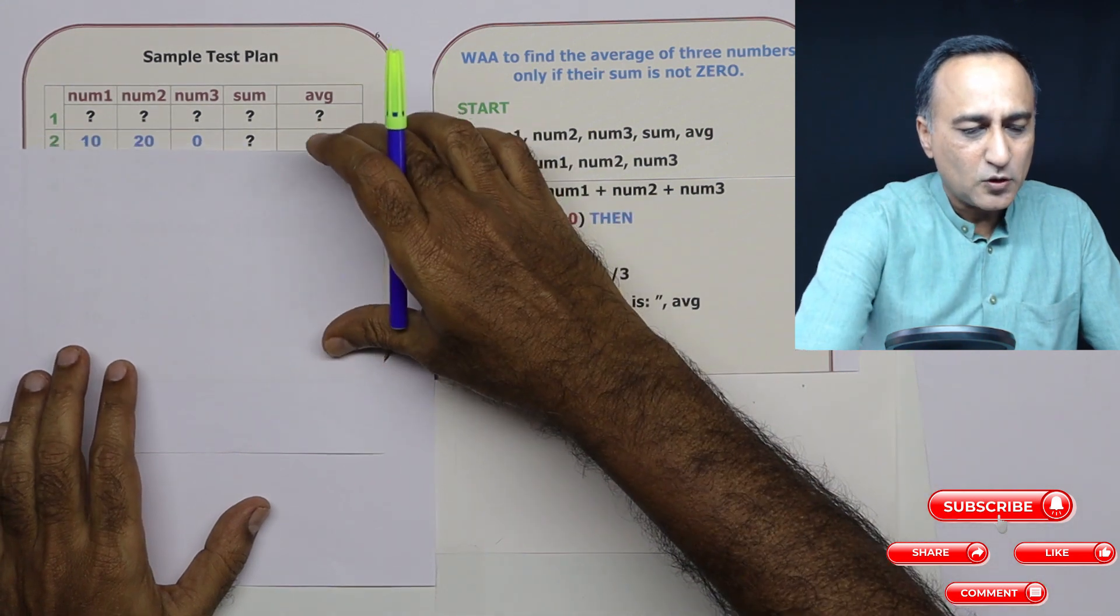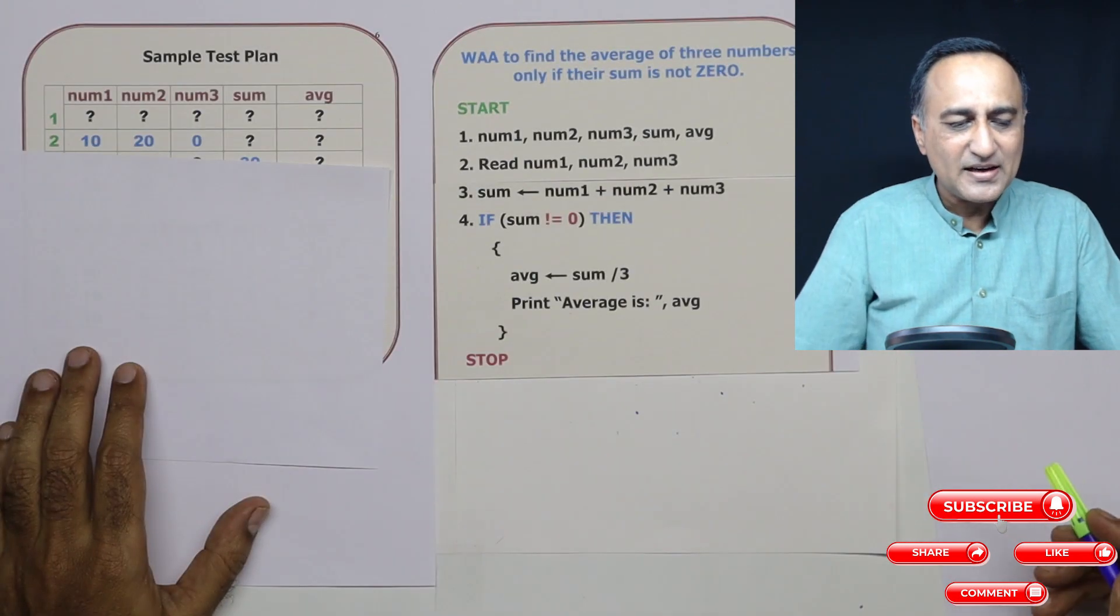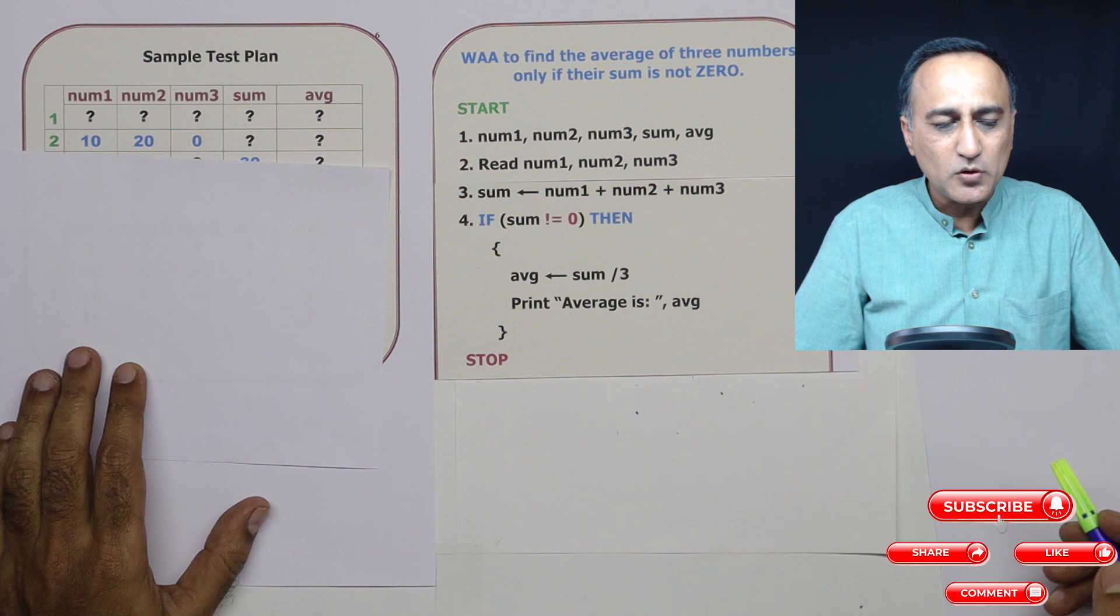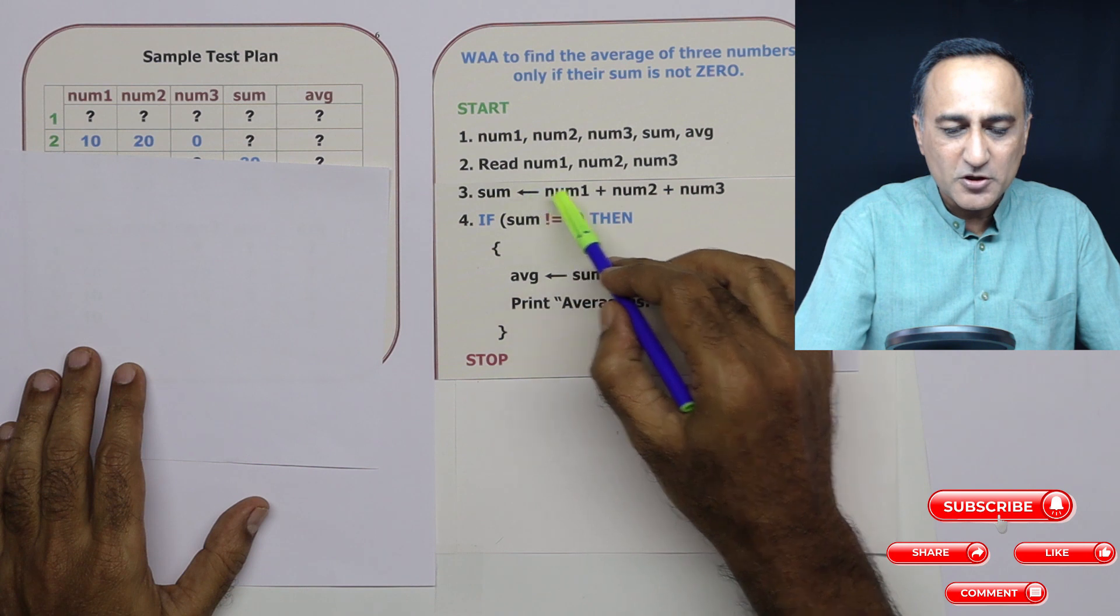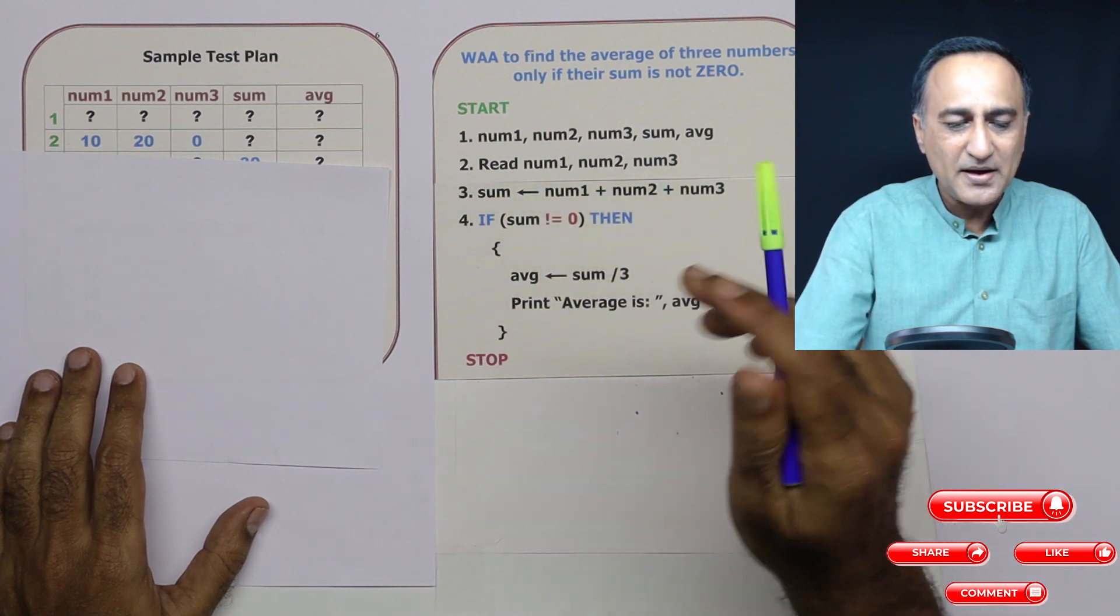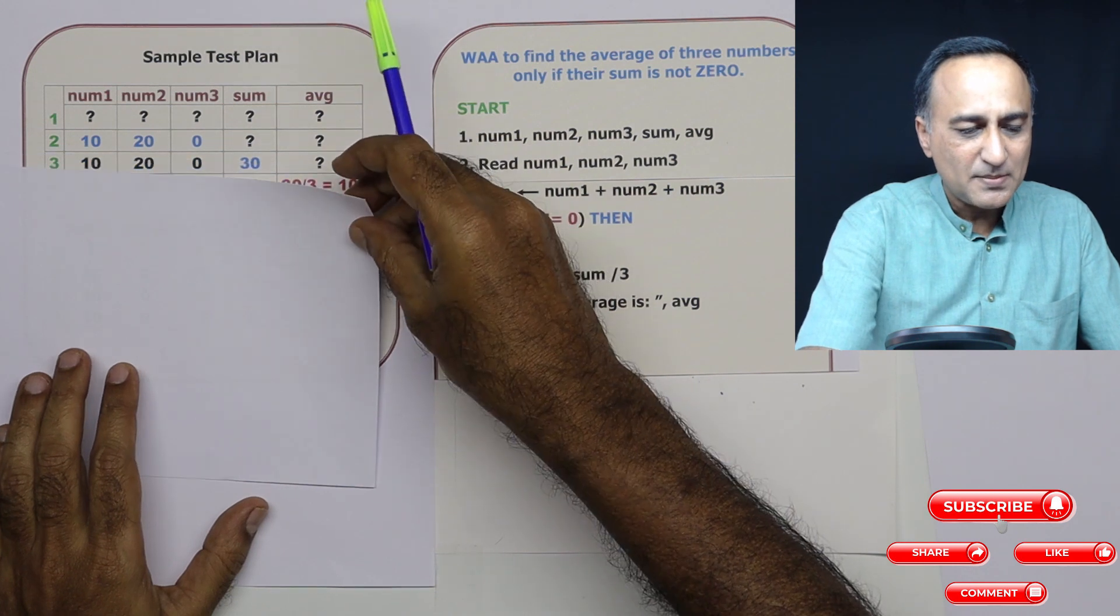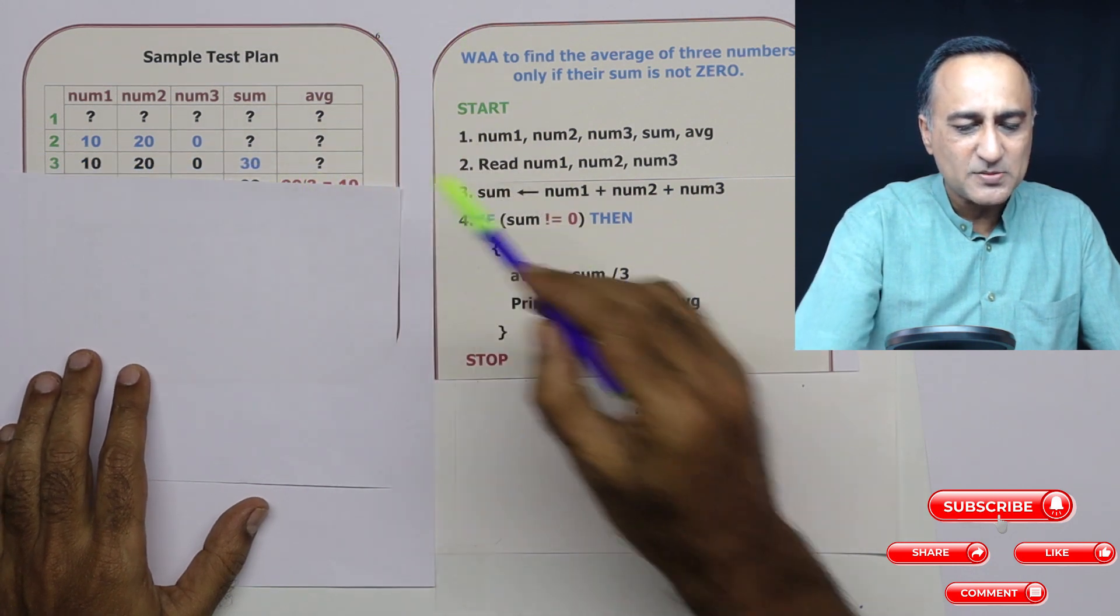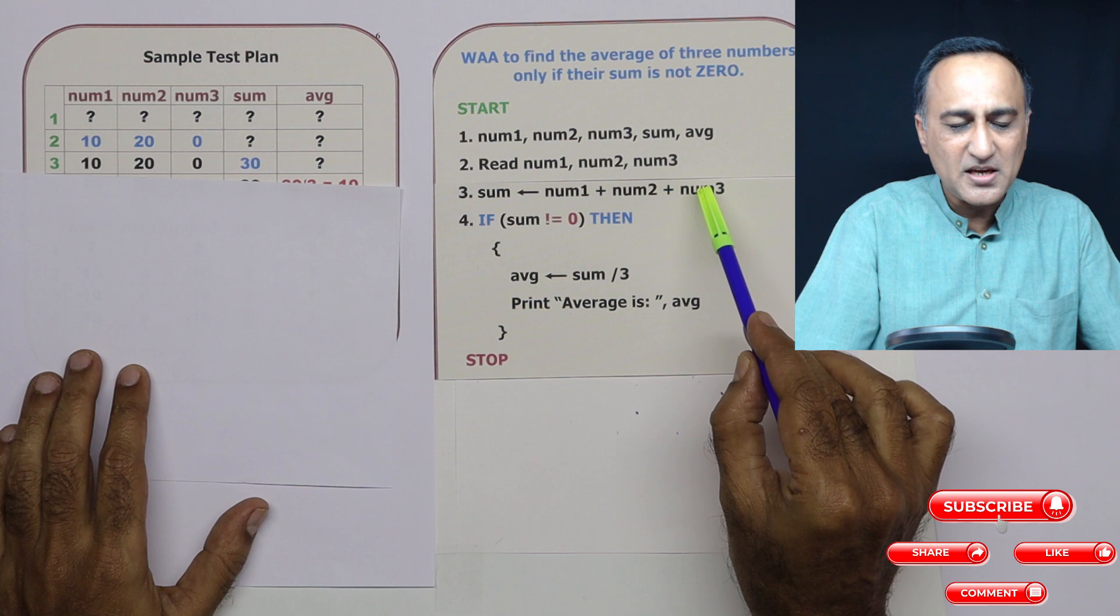Step number two, let us say I read 10, 20 and zero into num1, num2 and num3, respectively. Sum and average have not changed at step number two, because nothing has happened to sum and average. In step number three, you will see that sum has been calculated as these three addition.